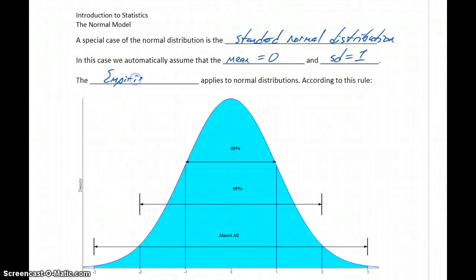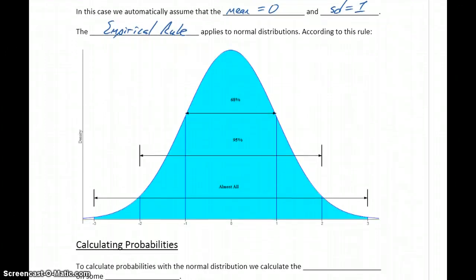The empirical rule applies to normal distributions. We've seen this before, but according to the normal distribution, between one standard deviation above and below our mean, we have 68% of all the data values.